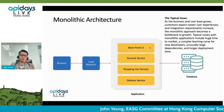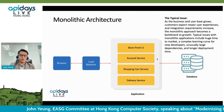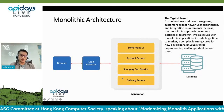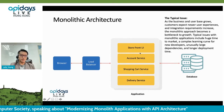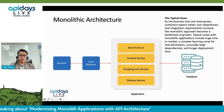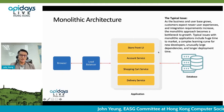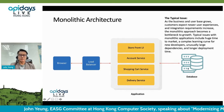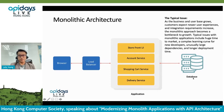Let me give you an example of monolithic architecture. This is a very typical traditional application — an e-commerce site with many different modules and one single database as the main database connecting to it. When we make one change, we need to test it completely within the entire application and then deploy to the production environment. This also applies to the database changes as well.